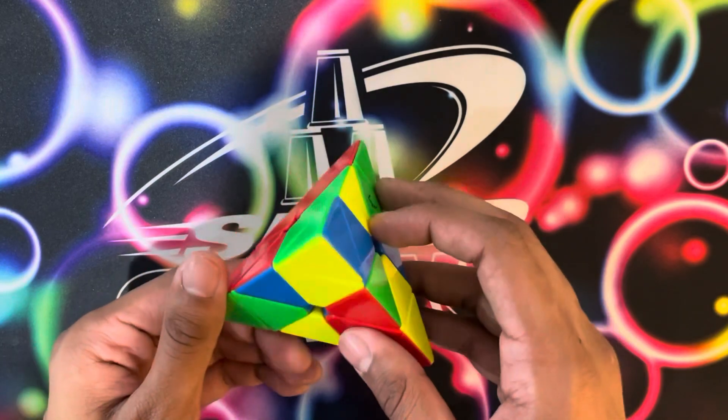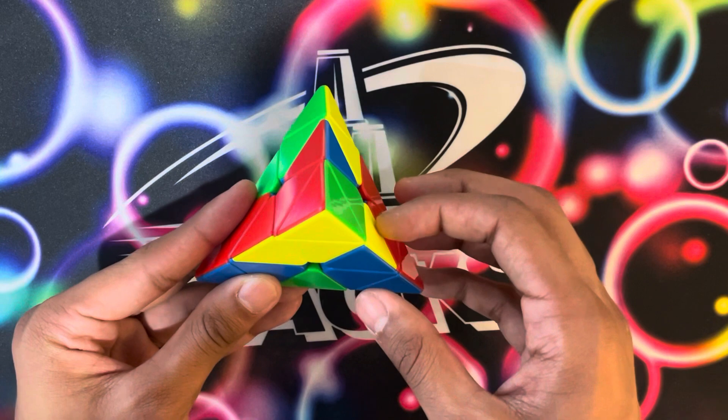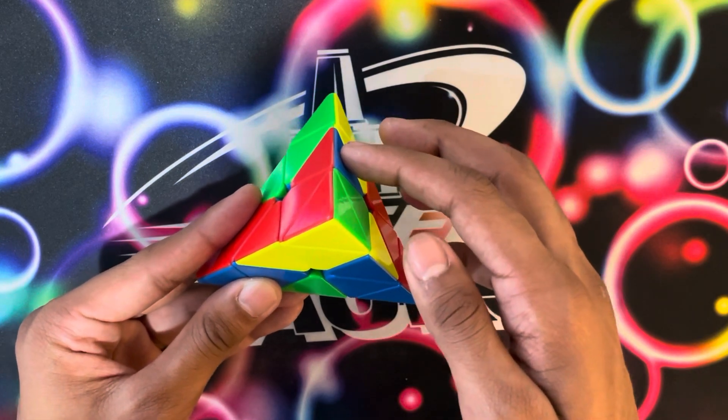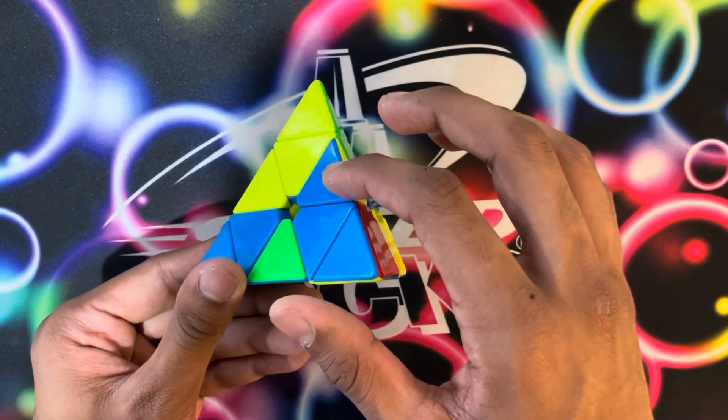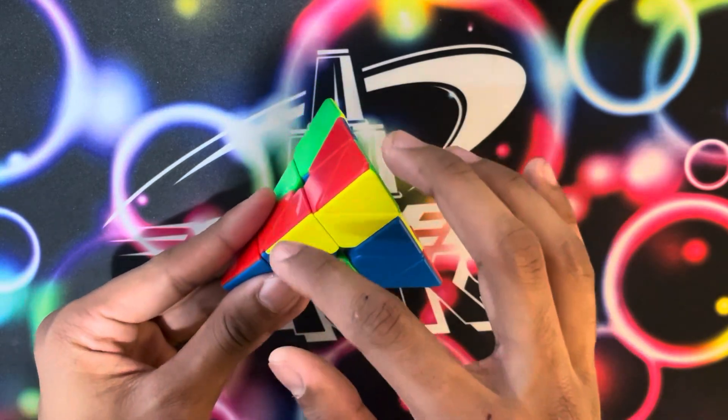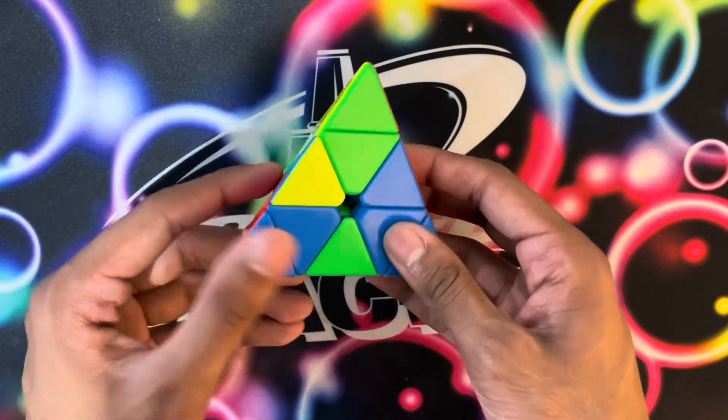On this solve, Chris does the blue V. He starts off by solving this blue-red edge while also moving this blue-yellow edge over here, which sets it up to go down here when you solve this center, like that.